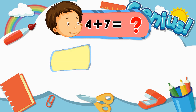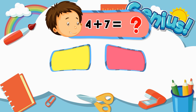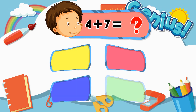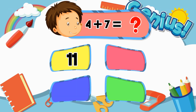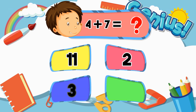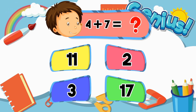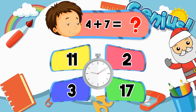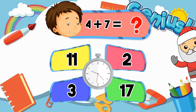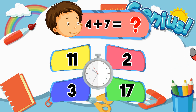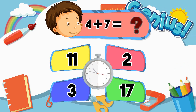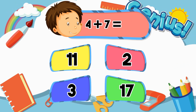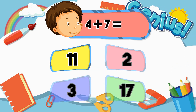What is 4 plus 7? 11, 2, 3, 17. The correct answer is 11.